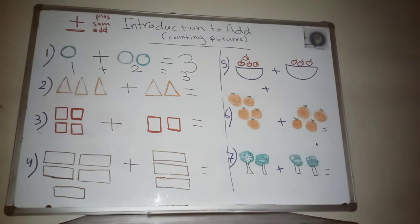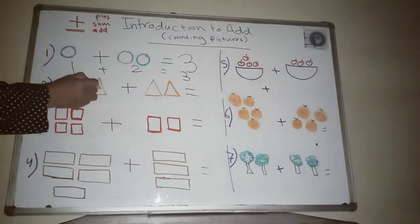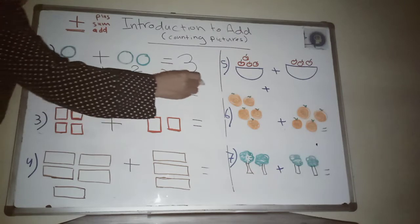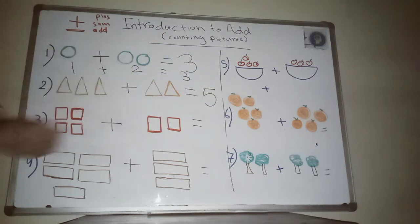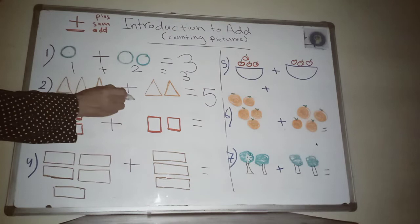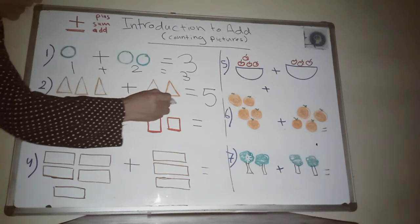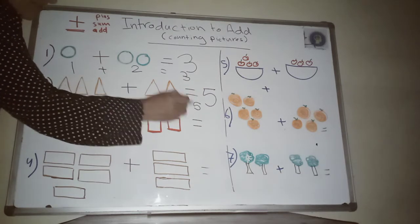I have three rectangles and two more rectangles. How many rectangles do we have? Let's count — one, two, three, four, five. So three plus two equals five. Very good!